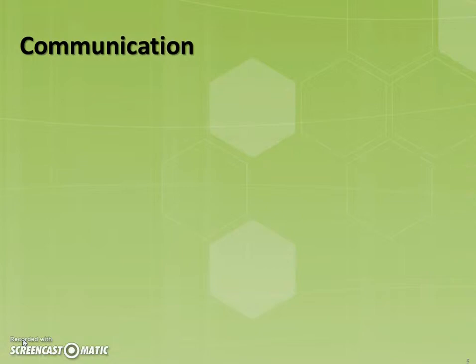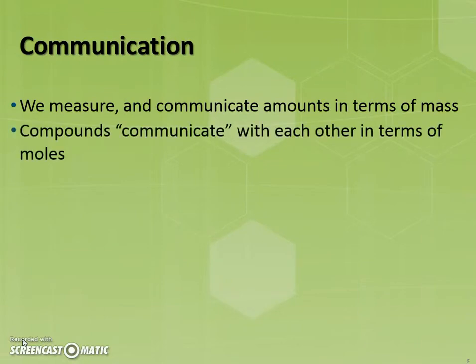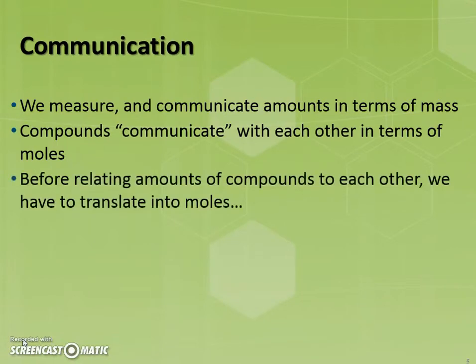What does stoichiometry mean? Well, it's useful to take a step backwards and talk about communication. Human beings measure and communicate amounts of compounds in terms, generally, of mass. This is inconsistent with the way that compounds communicate with each other — that is, how they react. They react with each other in terms of number of moles. And so what this means is that before we relate an amount of one compound to the amount of another compound, we have to translate the amounts into moles.